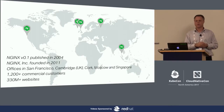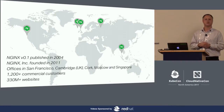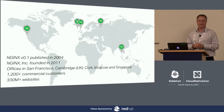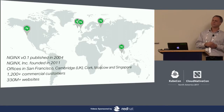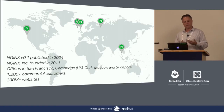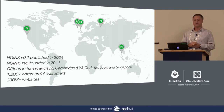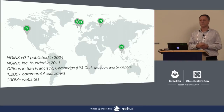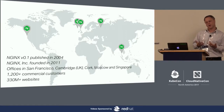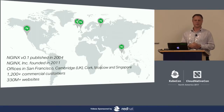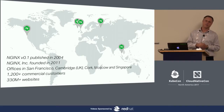At that point, web servers could do maybe hundreds of concurrent connections. With Nginx, he was able to bring that number to tens of thousands. So he open sourced the first version in 2004. Fast forward about seven years, it was very well received by the community and he could no longer manage the ecosystem on his own, so him and a couple of friends got together and created a company.